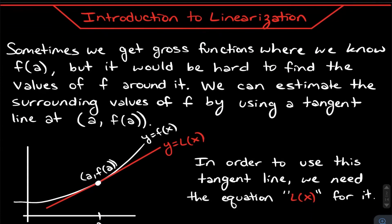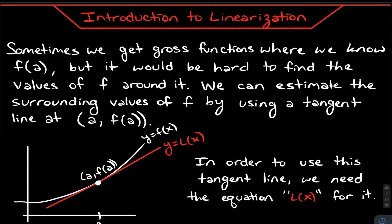We're going to start out here with an introduction to linearization. This is one of the methods we can use for linear approximations. The idea is sometimes we get gross functions where we know f of a — we know this point — but it's going to be hard or impossible to find values of f that are directly around that point. Maybe we want to find these y values around it, and so how do we do that?